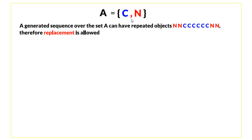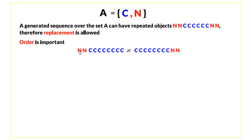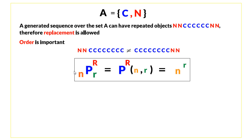There is another way to find the number of ways to answer this test: by looking at the sequence of correct and not correct answers. We can see that C can be repeated more than once and N can be repeated more than once, so replacement is allowed. Also, if we change the order of answering we change the result of the test, so order is important.